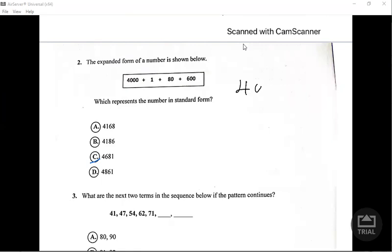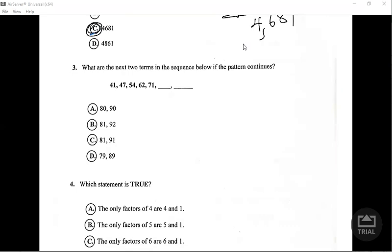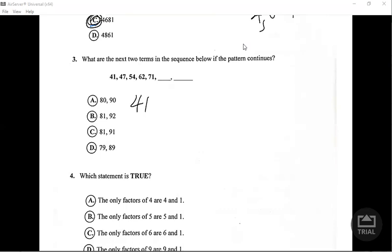Number three says what are the next two terms in the sequence? So here we have 41. Let's see what they did to get to 47, what they did to get to 54 and so on.